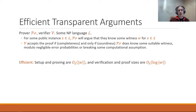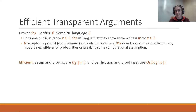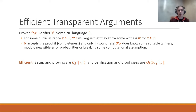So what do we mean by efficiency? For our purposes, that means setup and proving are both going to be linear in the size of the witness, and verification and proof size are both going to be logarithmic in the size of the witness. In applications, you can think of witness sizes being maybe 2 to 20, 2 to 30, so you really don't want to find yourself doing something quadratic in the size of the witness. It's certainly convenient for the verifier if all the operations they have to do are very small.